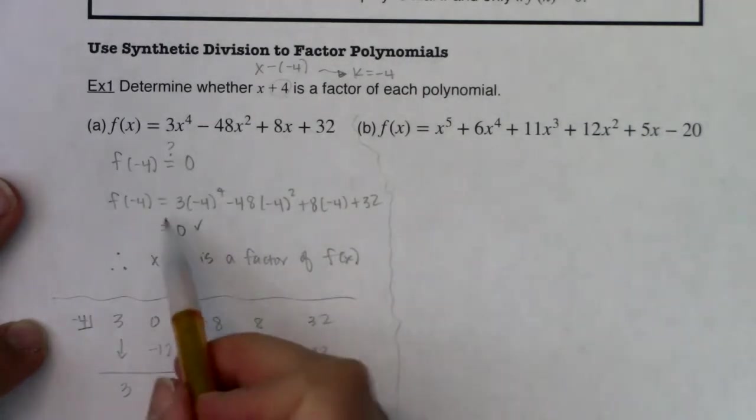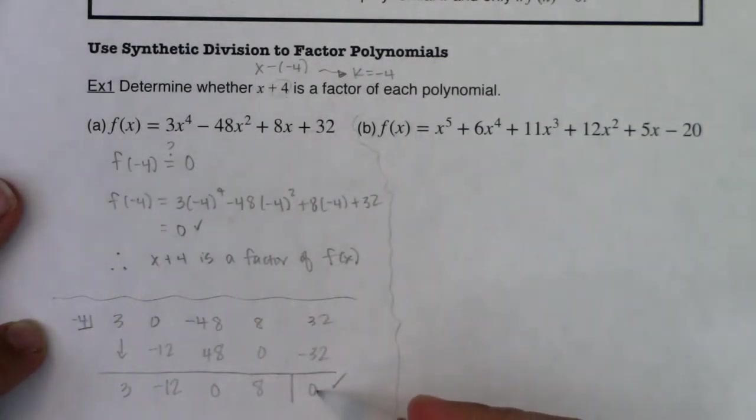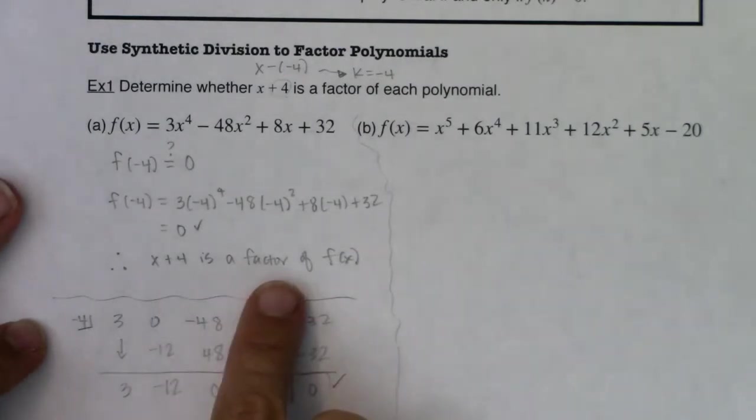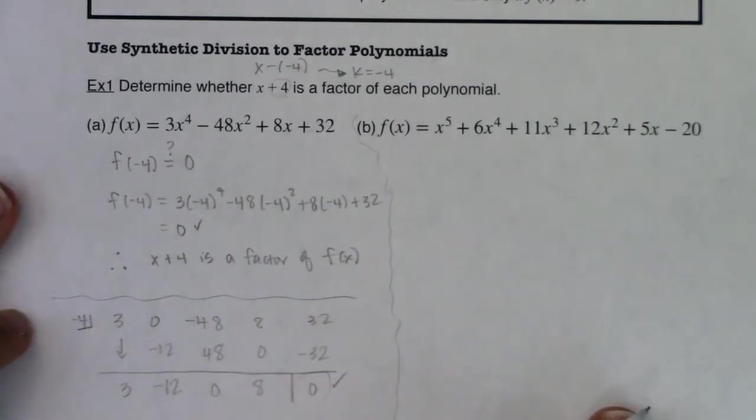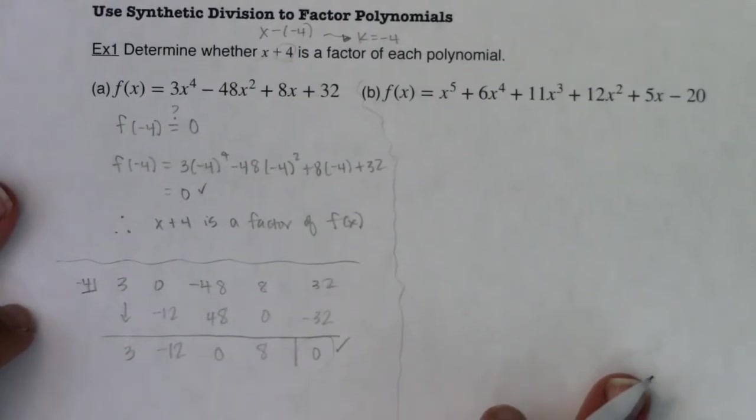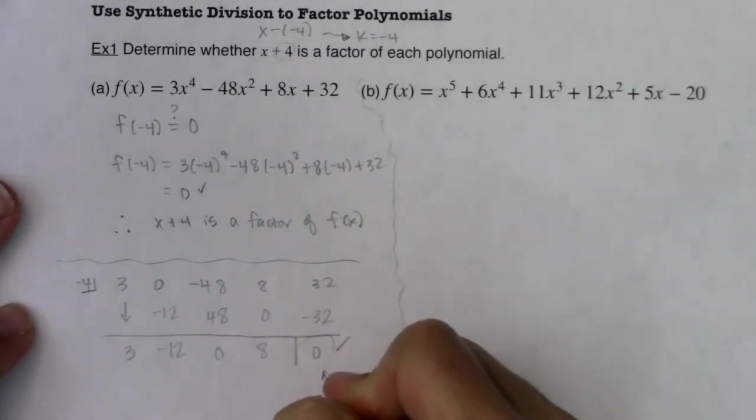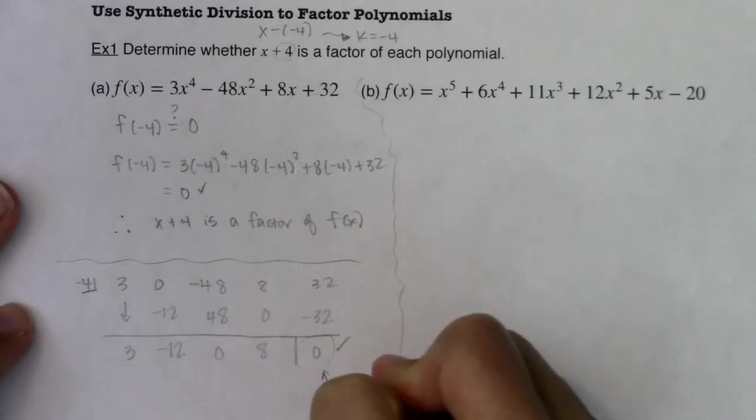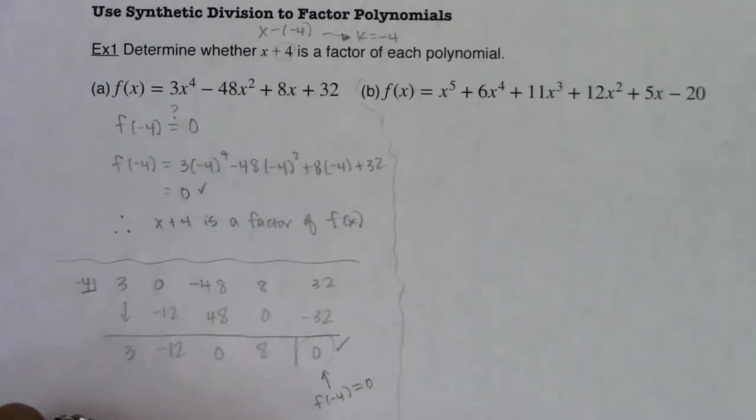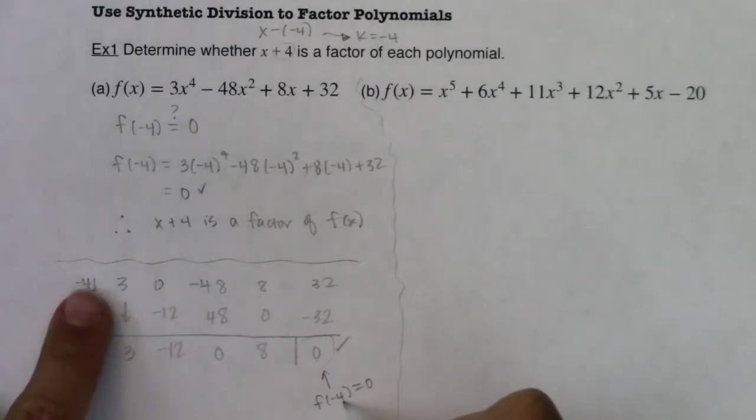So you can plug in negative 4 and see if you get a 0 back out. But without your calculator, that could be a little bit annoying. Or you could run synthetic division and see if you get a remainder of 0. If you get a remainder of 0, you know x plus 4 is a factor. Because the awesome thing, in addition to all the awesome things about synthetic division, this is always your function value. So I would know f of negative 4 is equal to 0. So that's what's even cooler, or super cool, another super cool thing about synthetic division. Whatever the remainder is, it's your function value for that k value that you plugged in.